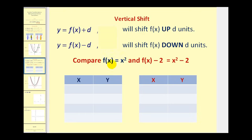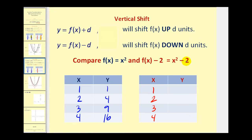Let's do another comparison using F of X and F of X minus 2. For F of X, we'll just square the input, giving us 1, 4, 9, 16. For F of X minus 2, we'll use the same inputs but square the input and then subtract 2: 1 squared minus 2 is negative 1, 2 squared minus 2 is 2, 3 squared minus 2 is 7, and 4 squared minus 2 is 14.